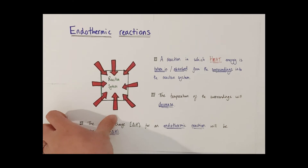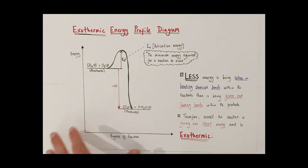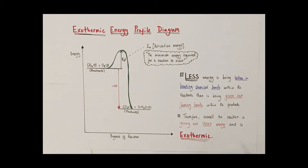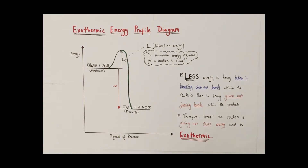This brings us neatly onto the idea of energy profile diagrams. This is a representation of an exothermic energy profile diagram. There are some key aspects: the x-axis is always the progress of reaction, and the y-axis is always a measure of relative energy. For all exothermic reactions, the reactants' energy line will always be higher than the products' energy line. An arrow is drawn to connect the reactant line to the product line — this arrow is known as the enthalpy change, and it is a measure of the heat energy being given out by this exothermic reaction.